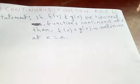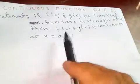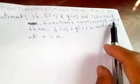Step 1 is that if f of x and g of x be two real functions continuous, that means f of x and g of x is continuous already at a, at point x equal to a.